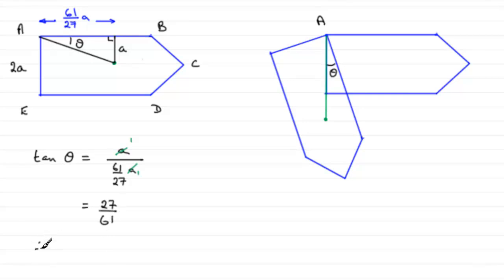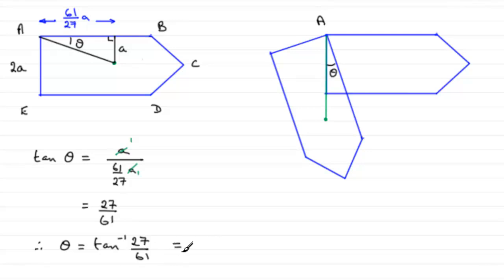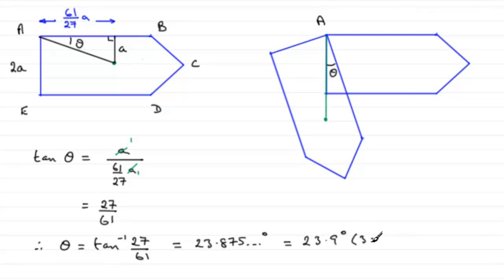Therefore, to get theta, just take the inverse tan of both sides: θ = arctan(27/61). If you do that, you should get 23.875... degrees, which when rounded to three significant figures is 23.9 degrees to 3SF.